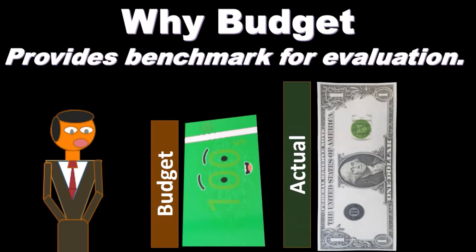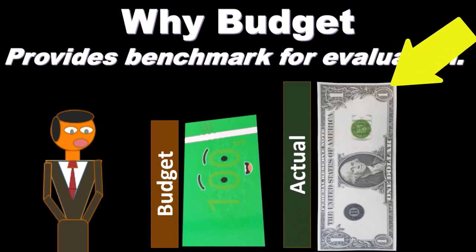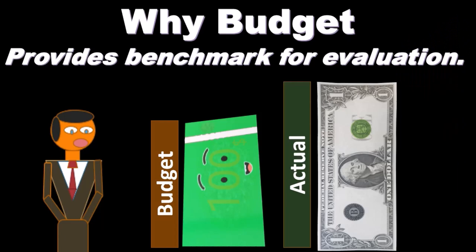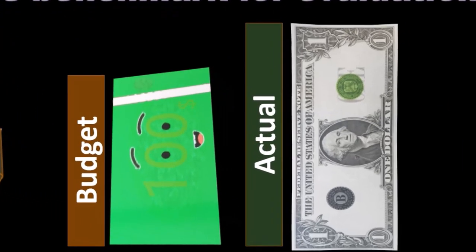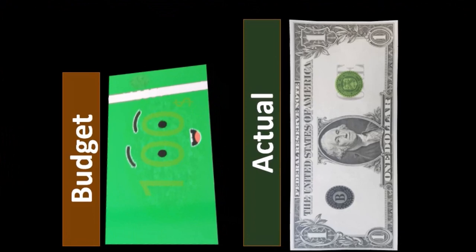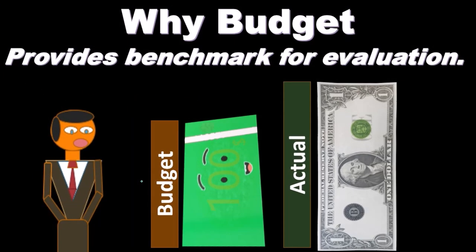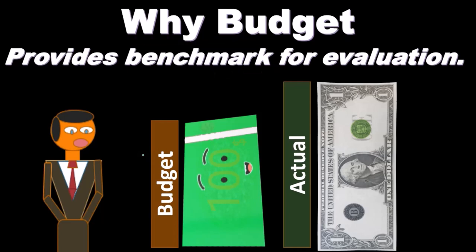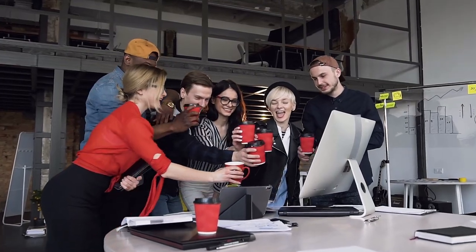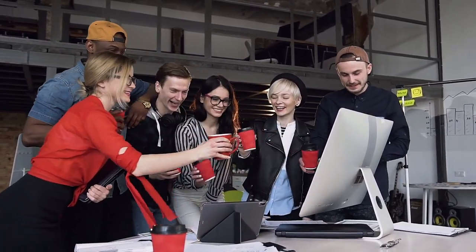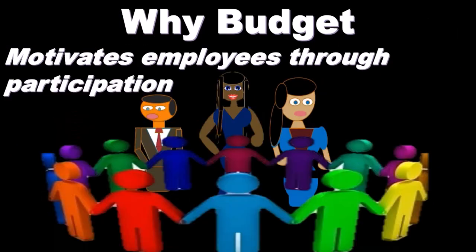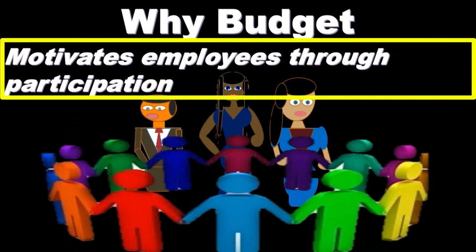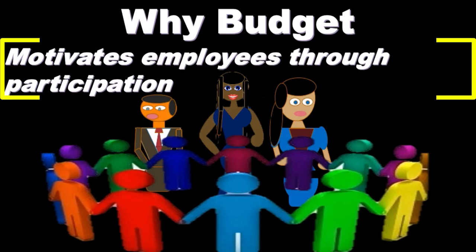The budget provides a benchmark for evaluation. We take the budgeted numbers, run the process, look at the actual numbers, and compare the two. We need that benchmark because without it, people don't have anything to shoot for and there's no way to evaluate how well people did. We need to be careful not to set the benchmark too low or too high — we want it to be challenging but achievable, so it inspires people. Once the time period passes, we do that comparison and evaluation.